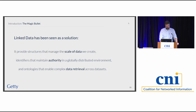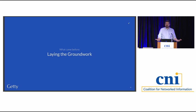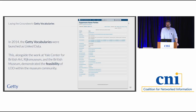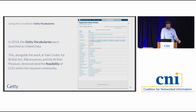Now I want to lay out from the perspective of the Getty how we got to where we are. I'll start with the Getty Vocabularies — a service that provides thesauri for discovery of cultural information: AAT, ULAN, TGM. In 2014, Getty was one of the first organizations to put these out as a large linked data ecosystem. We weren't the only ones — the Yale Center for British Art, the Rijksmuseum, and the British Museum were part of this wave asking: what would happen if the museum adopted this technology?